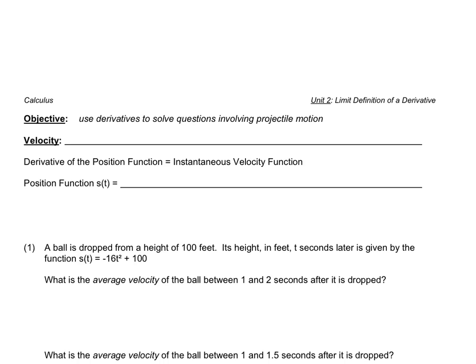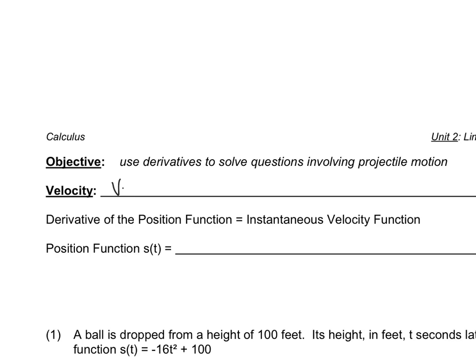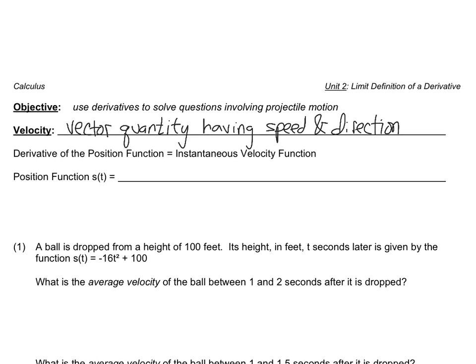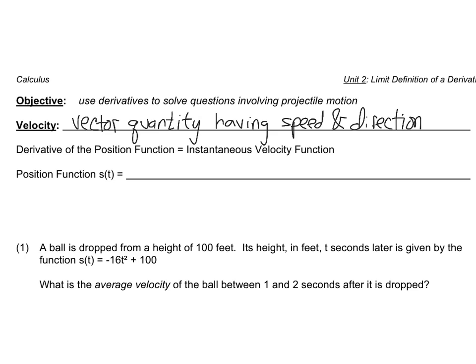Velocity. Velocity is a vector — a vector quantity having magnitude and direction. The magnitude would be speed. We're not really going to get into vector operations or anything like that, at least not for the foreseeable future. But the idea is that we're not just talking about the magnitude of the speed; we're also talking about which direction it's going in.